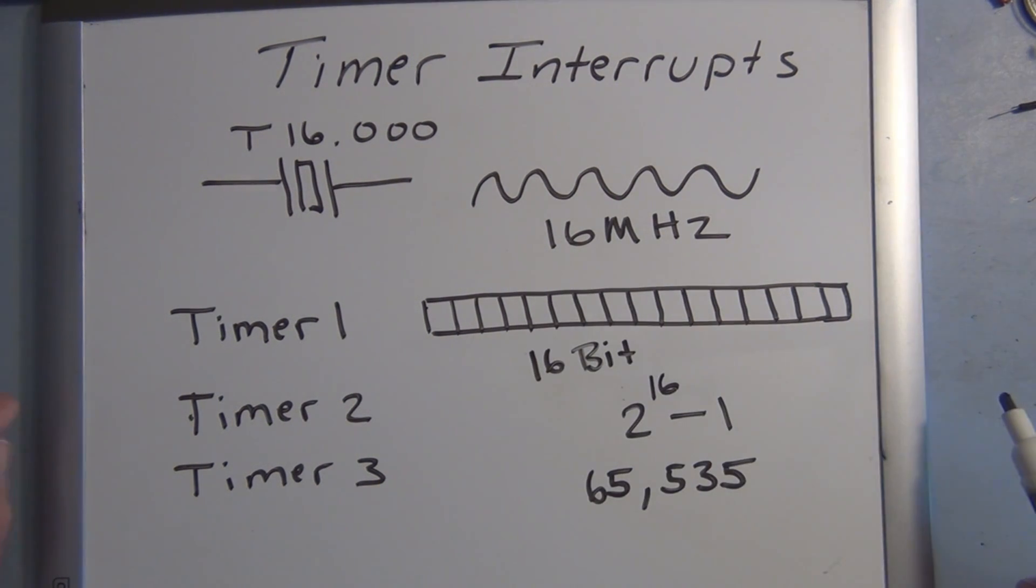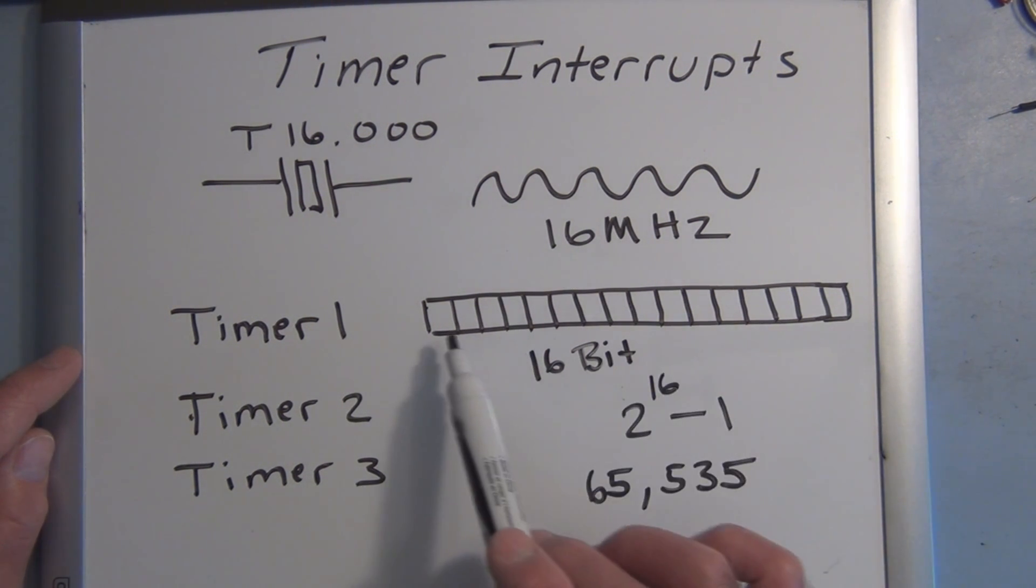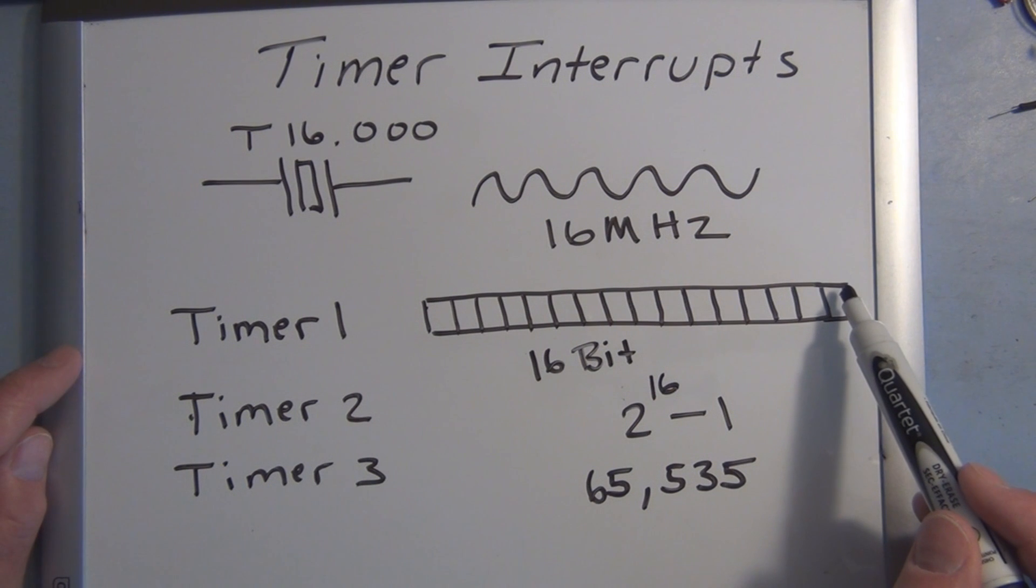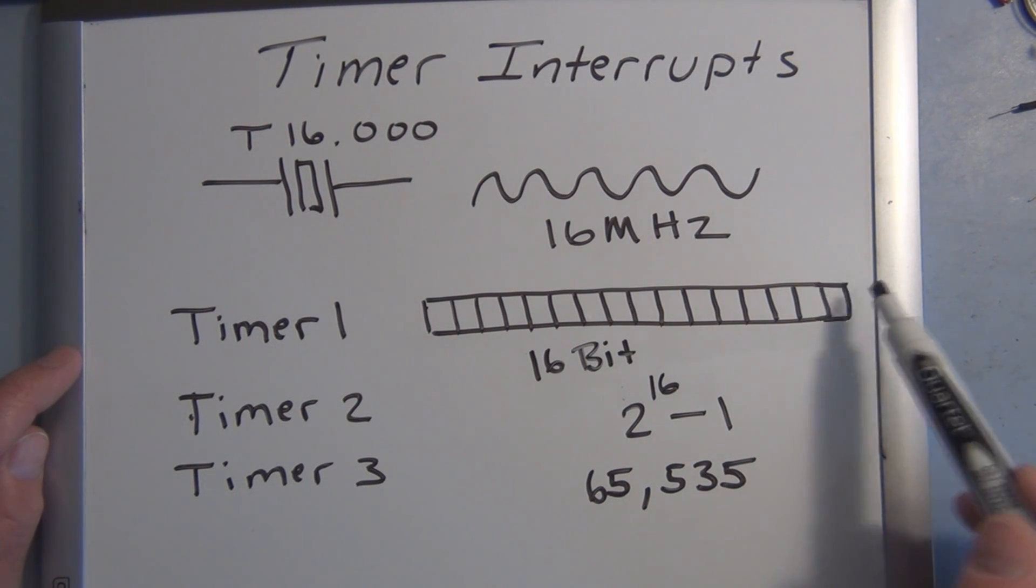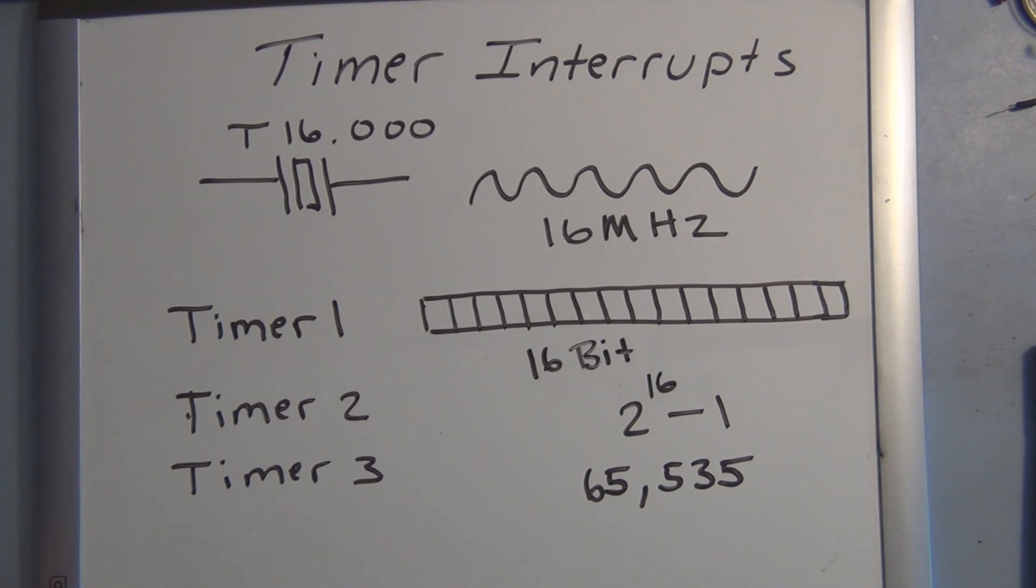That may seem a lot, but when you're counting or cycling at 16 megahertz, you run through this pretty quickly. You can hardware and also software divide this 16 megahertz so you can slow this down. The Arduino software language doesn't officially recognize taking manual control of this timer, but there is a third-party library that's been created that allows you to manipulate this 16-bit register and use it for timing, and specifically for timer interrupts.